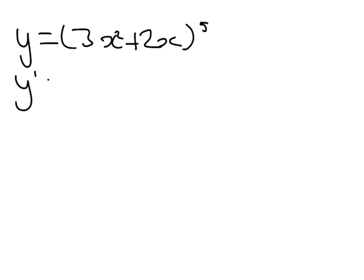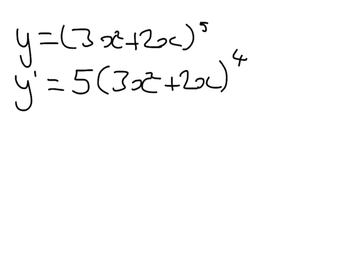So y dash becomes, bring down the power, 5 times 3x squared plus 2x, take one off the power to the power of 4.